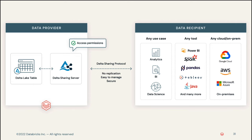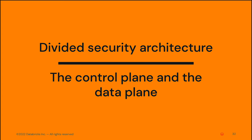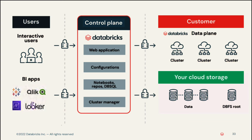Delta Sharing is a simple REST protocol that securely shares access to part of a cloud dataset, leveraging modern cloud storage systems to reliably transfer large datasets. The Databricks Lakehouse platform provides a simple and unified approach to data security by splitting the architecture into two separate planes: the control plane and the data plane. The control plane consists of the managed backend services that Databricks provides, living in Databricks' own cloud account aligned with the customer's cloud service — AWS, Azure, or GCP. Here, Databricks runs the workspace application and manages notebooks, configuration, and clusters.